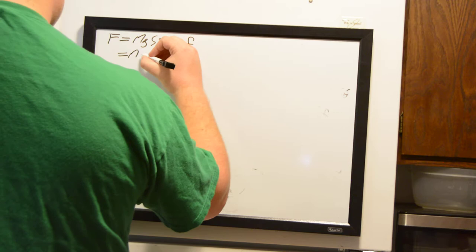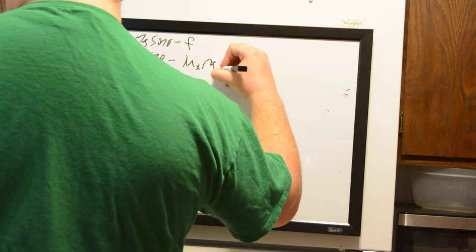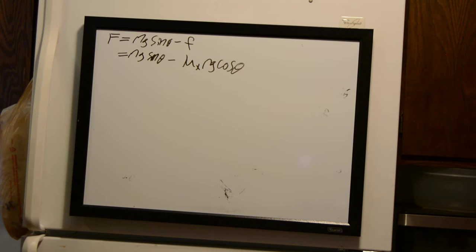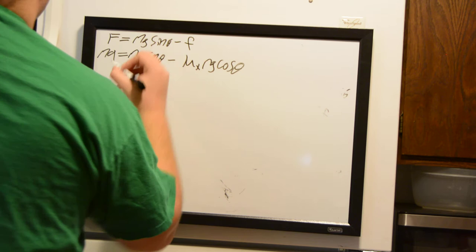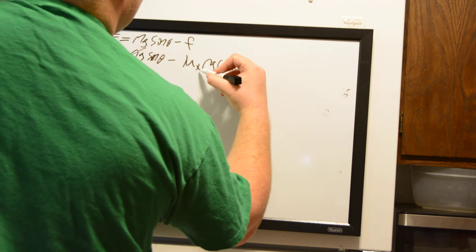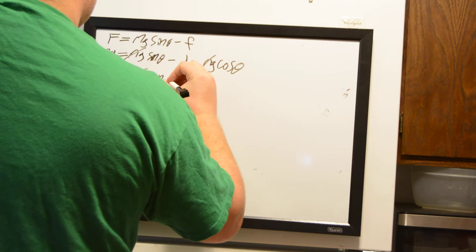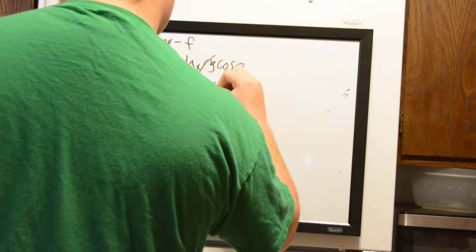We plug everything in: mass times gravity times sine of theta minus the frictional coefficient times mass times gravity times cosine of theta. We also know that force equals mass times acceleration, so we divide mass across both sides, which cancels mass out of both factors. Acceleration is therefore equal to gravity times sine of theta minus the frictional coefficient times cosine of theta.